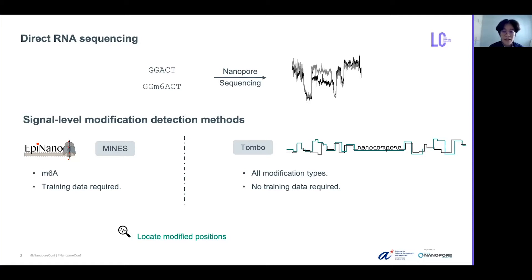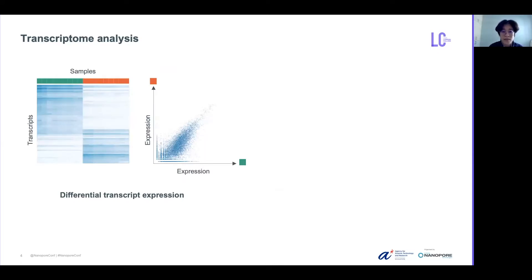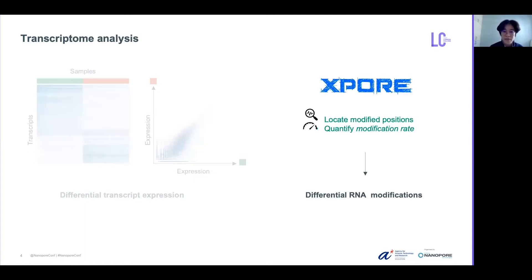Despite the detection of modified positions, none of them explicitly estimate the modification rate, or how many reads are modified, which is very important in downstream analysis. Imagine when we perform a transcriptome analysis — the common task is to find which transcripts are differentially expressed between samples. Similarly, we have developed Xpore, a method that not only locates modified sites, but also quantifies the modification rates. Then we can use them to detect differentially modified positions in the same way as transcript expression analysis has been done for many years. We believe that such differential modifications can make the transcriptome analysis even more complete as another layer of genetic information.